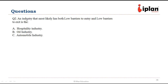Question number two says: an industry that most likely has both low barriers to entry and low barriers to exit — which of these is it? Hospitality, oil industry, or automobile? For the automobile industry, large investments need to be made. Similarly, for the oil industry, there will be high entry barriers.